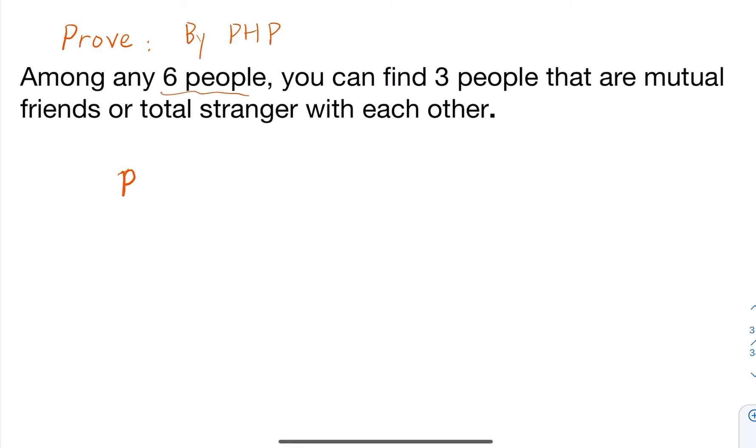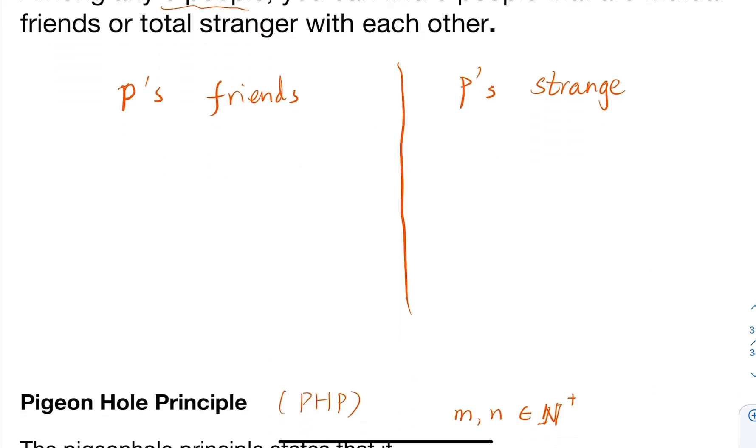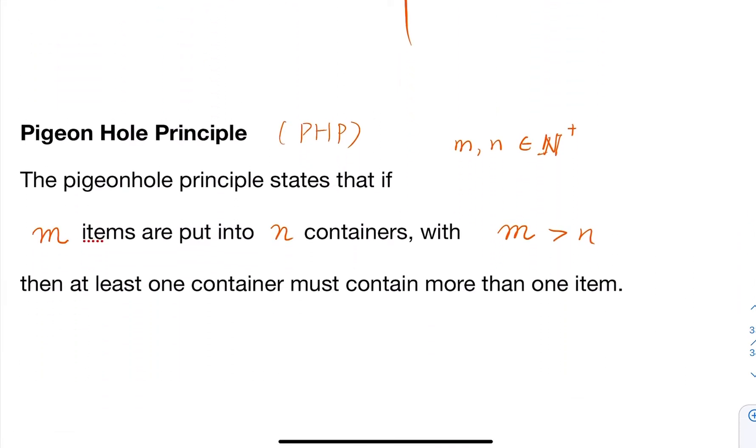For these five people, you can divide them into either P's friends or P's strangers - into two boxes. You have five people trying to fit into two boxes. This is the Pigeonhole Principle in its original form.